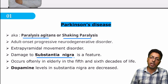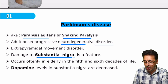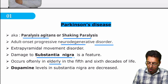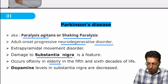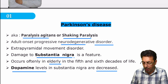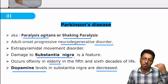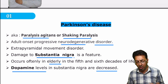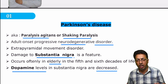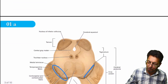Parkinson's disease is basically a neurodegenerative disorder seen particularly in the elderly. The problem is that dopamine levels in the substantia nigra decrease. So to summarize the key points: Parkinson's disease, also called paralysis agitans or shaking paralysis, involves neurodegeneration of the substantia nigra with depletion of dopamine, and it preferably affects the elderly.